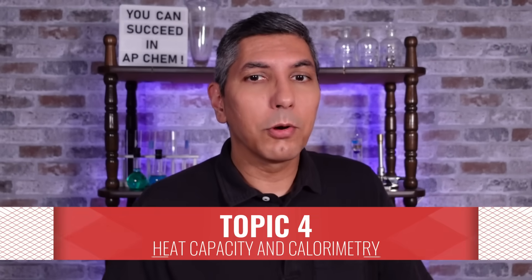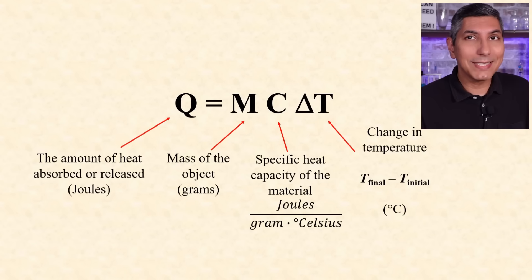We can calculate the amount of heat transferred between two systems with the equation Q equals MC delta T. Q represents the amount of heat transferred in joules, M is the mass in grams, C is the specific heat capacity of a material, and delta T is the change in temperature.